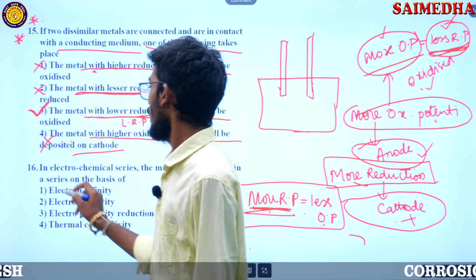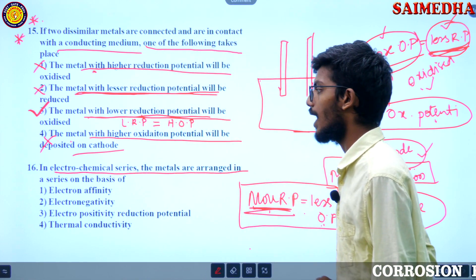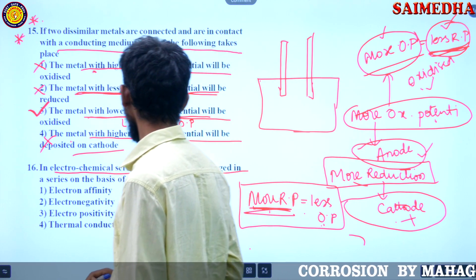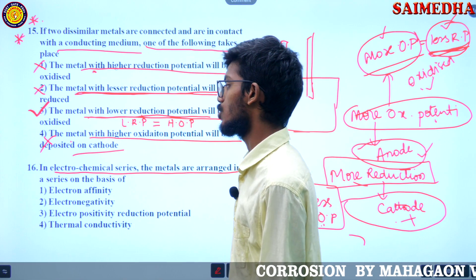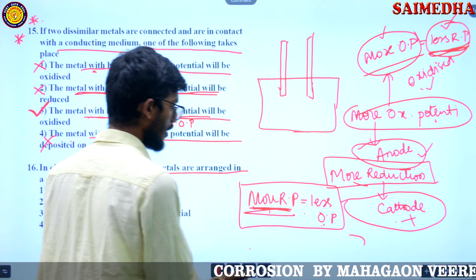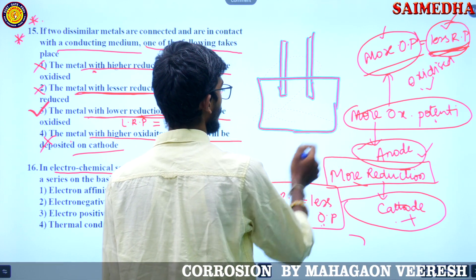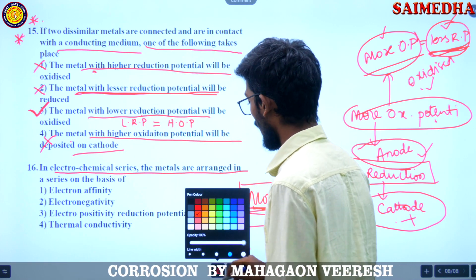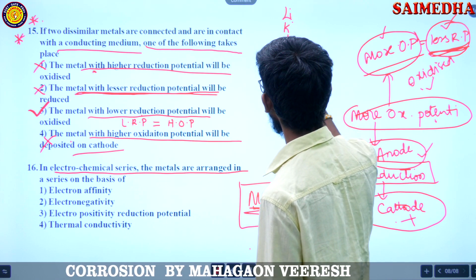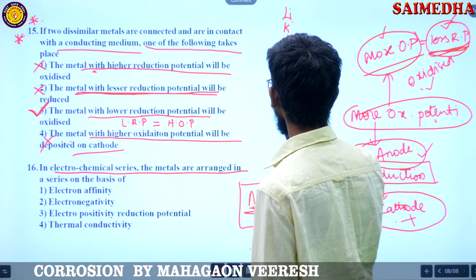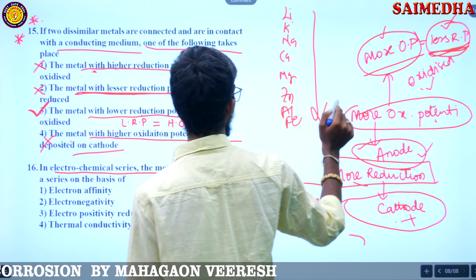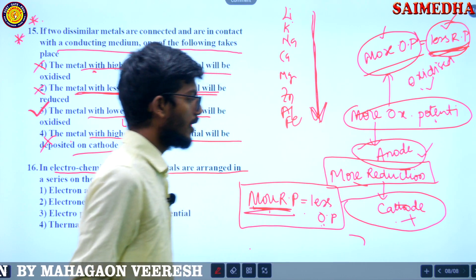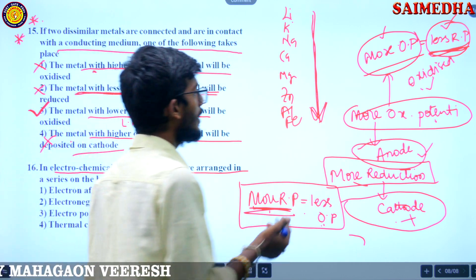In an electrochemical series, the metals are arranged in a series. We know the electrochemical series goes: lithium, potassium, sodium, calcium, magnesium, zinc, aluminum, ferrous, and so on. These are arranged in the decreasing order of oxidation potential, or equivalently the increasing order of reduction potential.